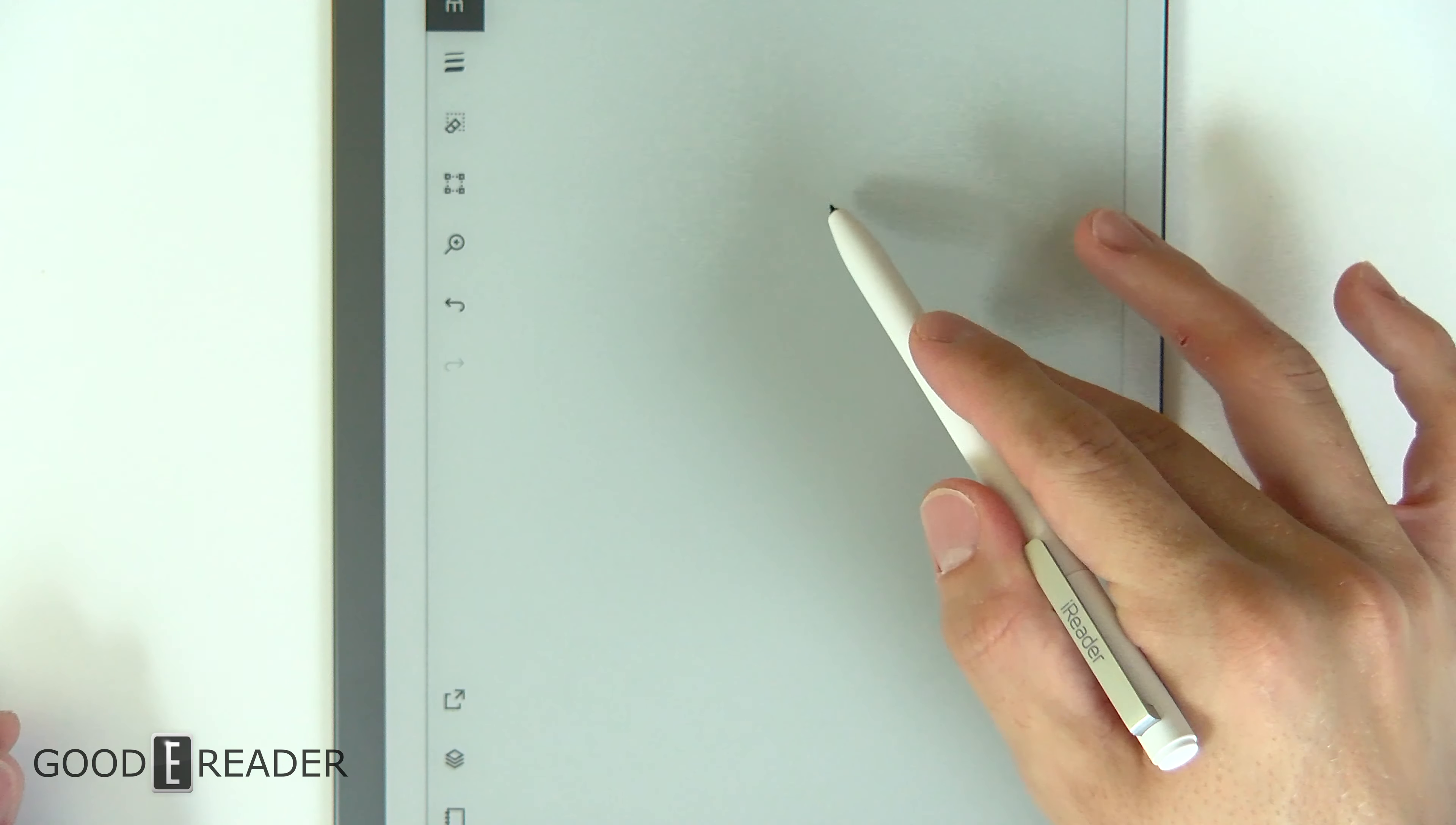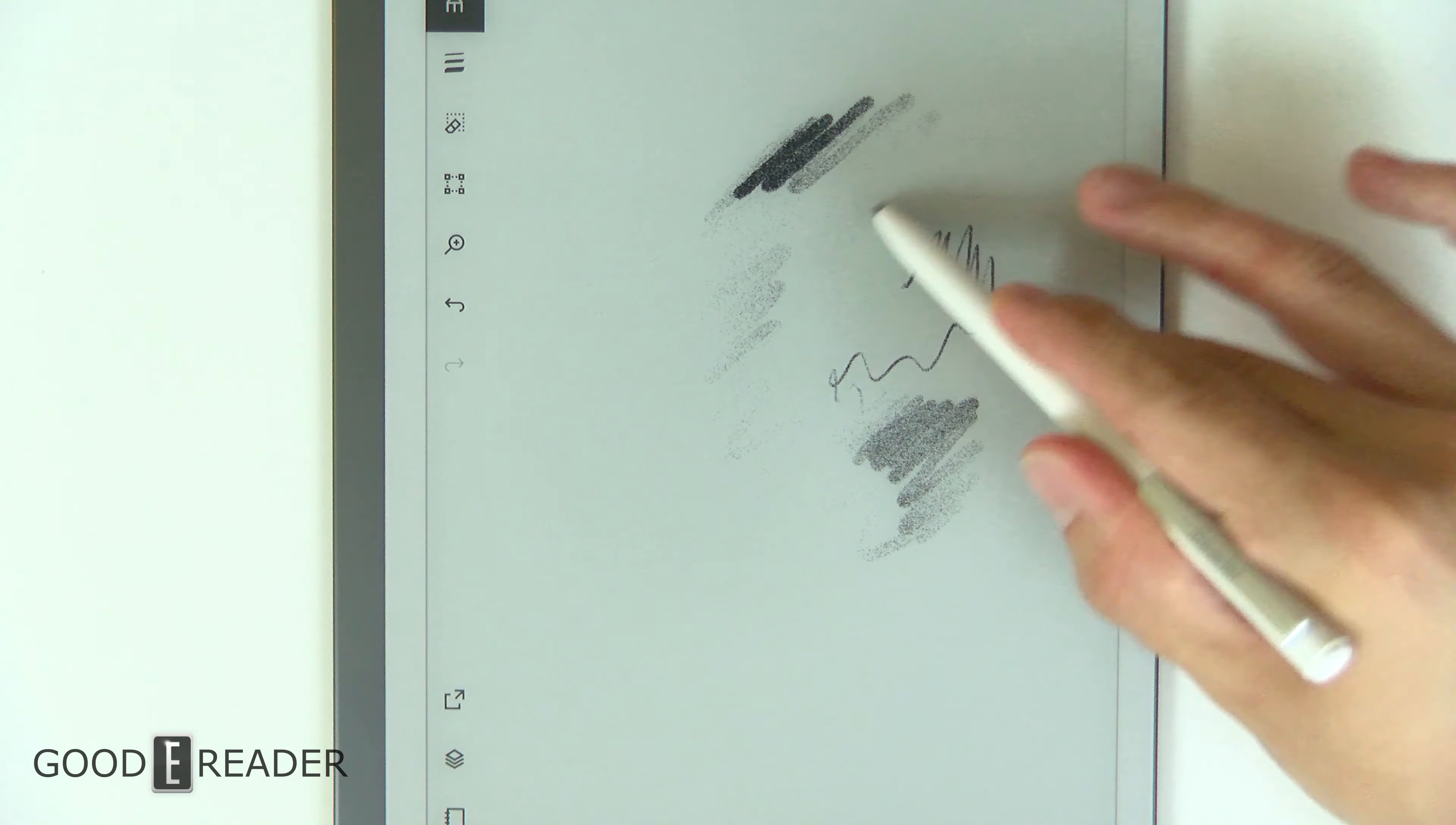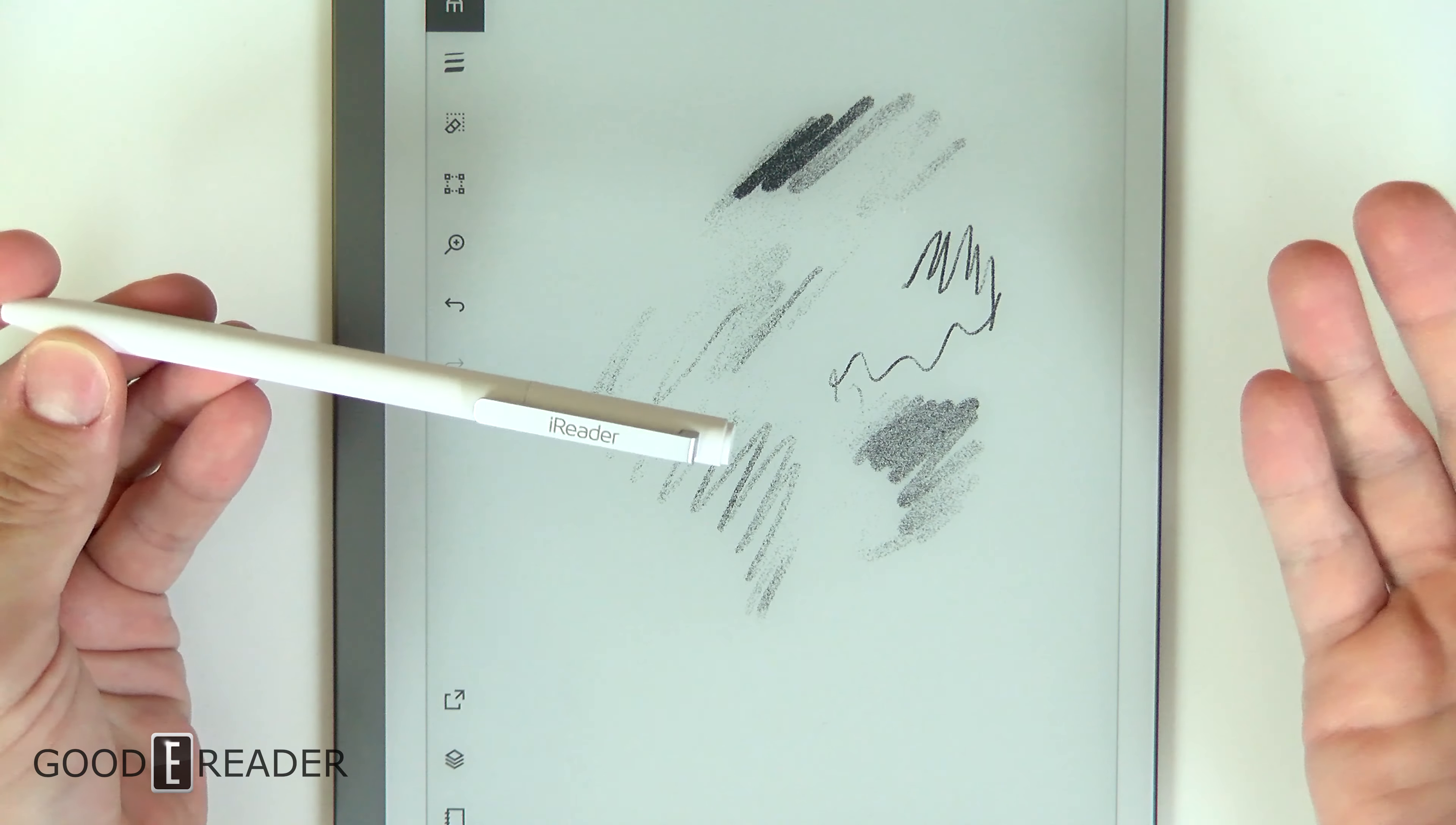With the pencil selected, not only can we use the pencil and all of its pressure sensitivity, but it even uses tilt, just like the Remarkable pen does. As light or as hard as you want to push it, it works perfectly fine. And this isn't even a Remarkable product. This is a completely third-party iReader pen, and it's doing an amazing job.